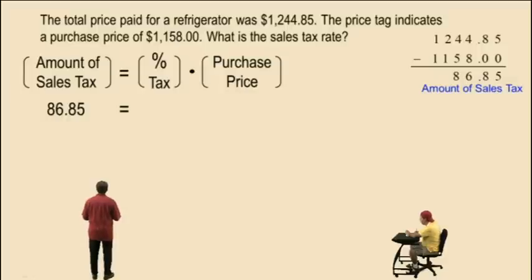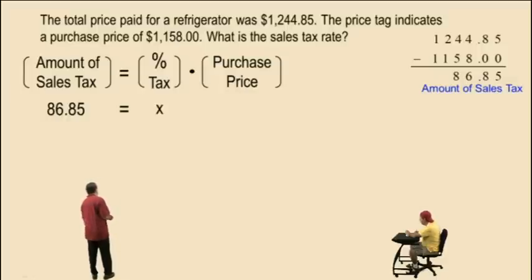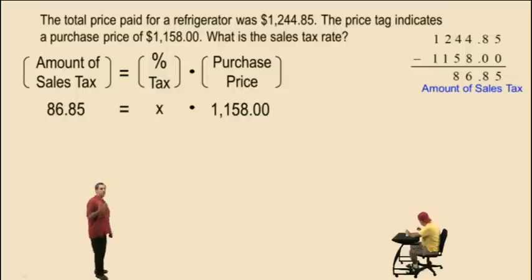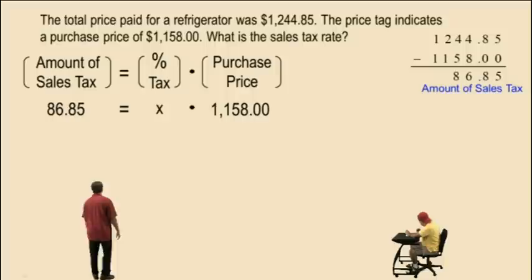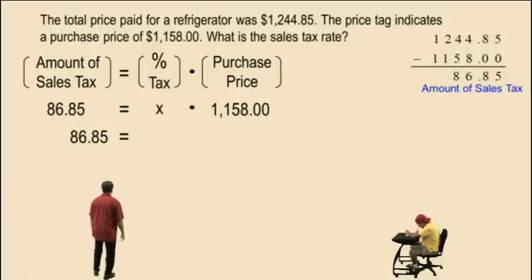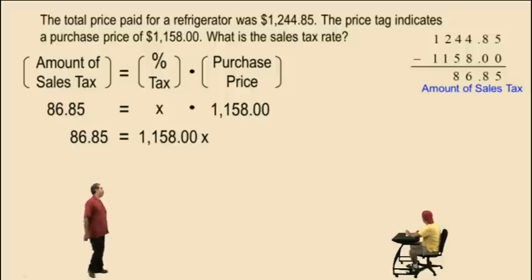Now we can start filling in our equation. Since we're looking for percent sales tax, we will represent that quantity by x. The purchase price — the price on the price tag — is $1,158.00. So our equation is: $86.85 equals $1,158.00 times x.